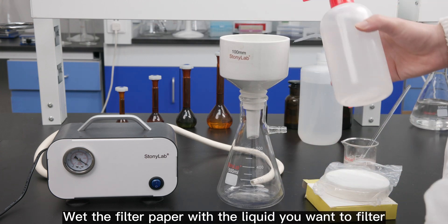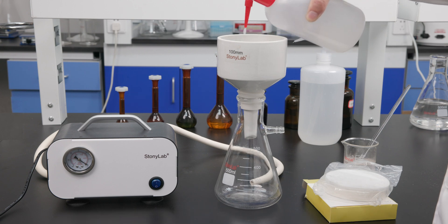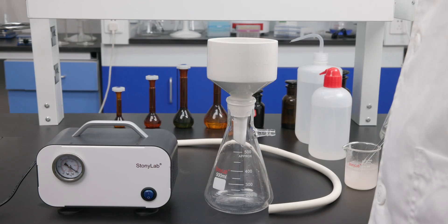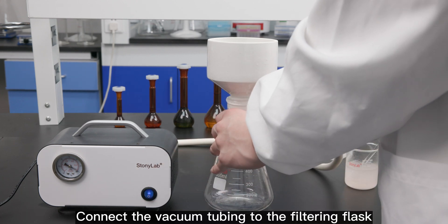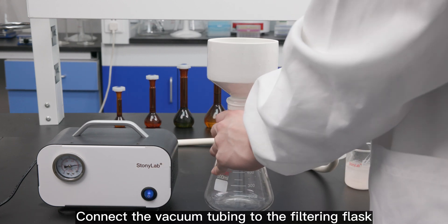Wet the filter paper with the liquid you want to filter. Turn on the vacuum pump. Connect the vacuum tubing to the filtering flask.